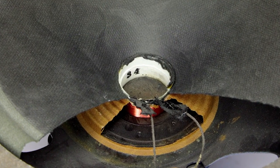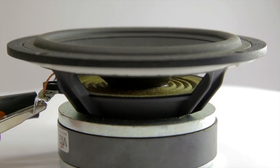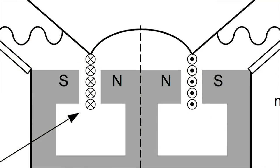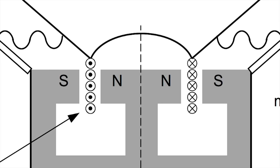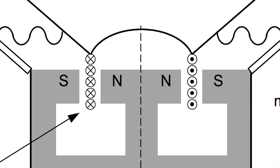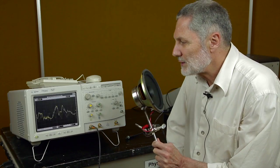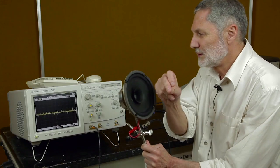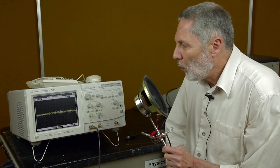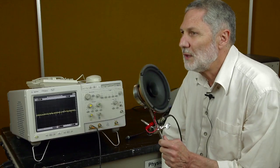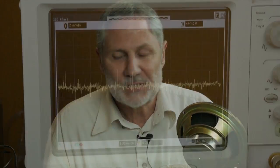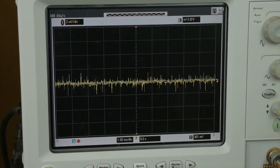Essentially the same effect should occur for a loudspeaker. Incoming sound causes motion of the cone and thus the voice coil. The motion of the voice coil in the magnetic field should produce a voltage across the coil, but the effect may be too small to observe. Let's do an experiment. The loudspeaker is now directly connected to an oscilloscope. As you can see, the sound produces a signal — a varying voltage on the oscilloscope.